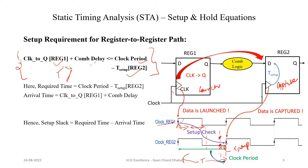Now let's identify the required time and arrival time for setup analysis. The required time is the deadline by which data must arrive — it is clock period minus t_setup of register 2. The arrival time is the actual time the data takes to propagate from when the rising edge happens until it reaches the data input pin of the flip-flop. The arrival time is clock-to-Q delay of register 1 plus the combinational delay.